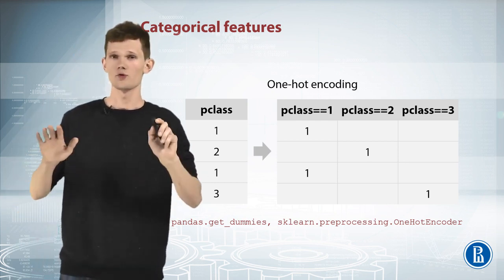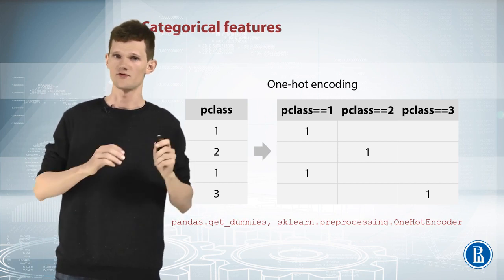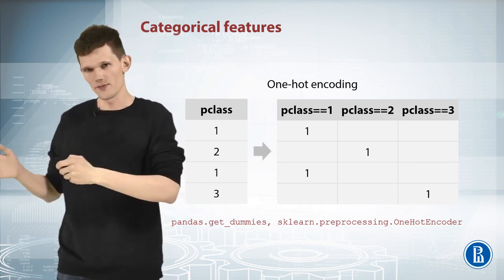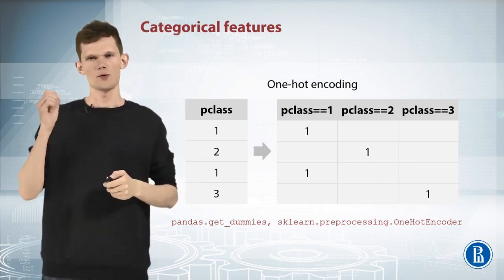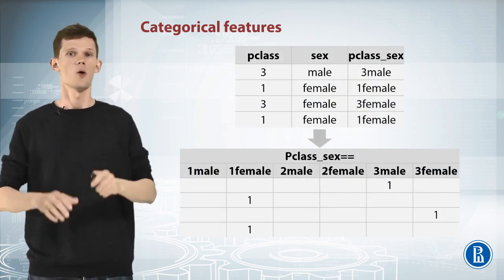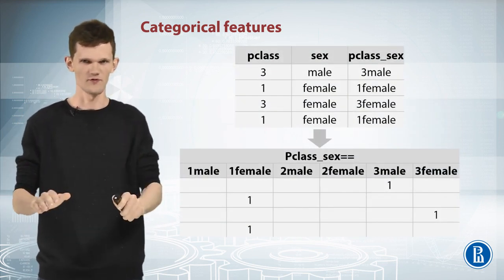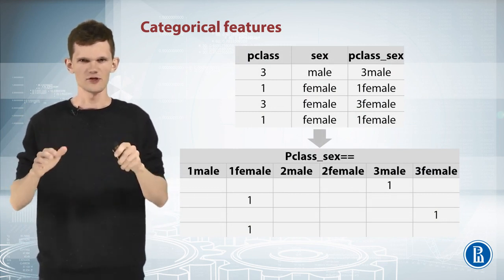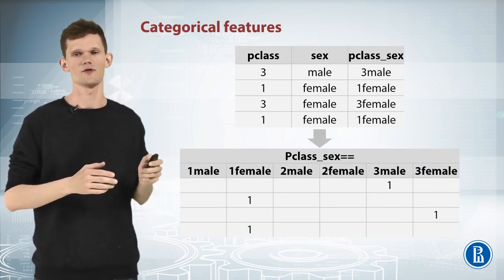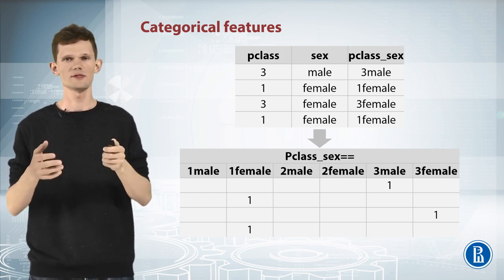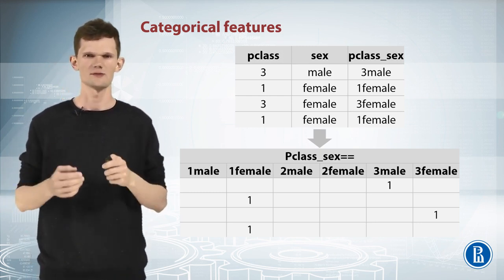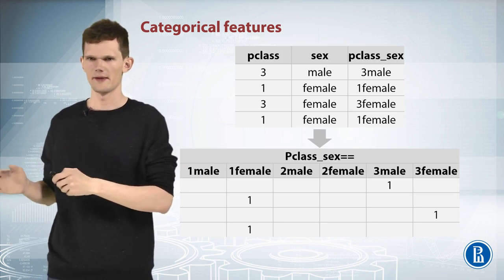After figuring out how to pre-process categorical features for tree-based and non-tree-based models, we can take a quick look at feature generation. One of most useful examples of feature generation is feature interaction between several categorical features. This is usually useful for non-tree-based models, namely linear model and KNN.